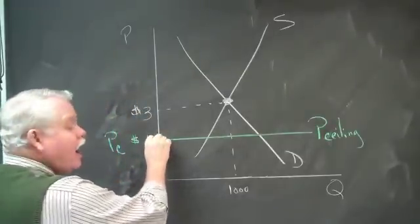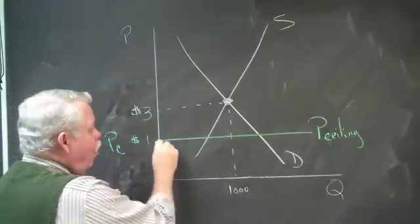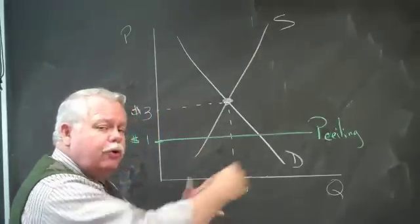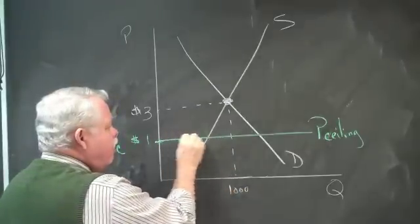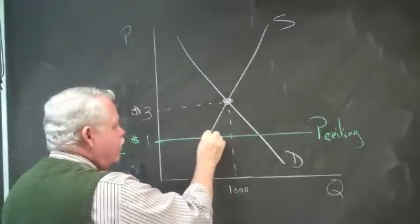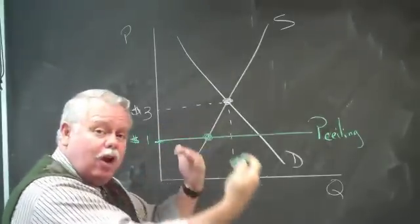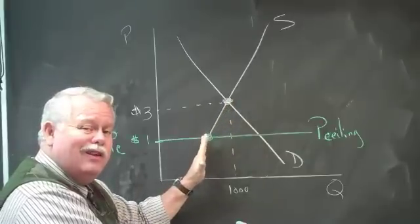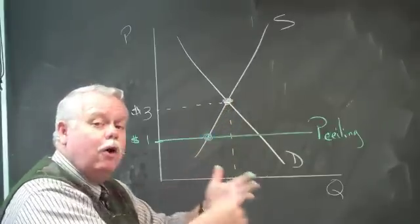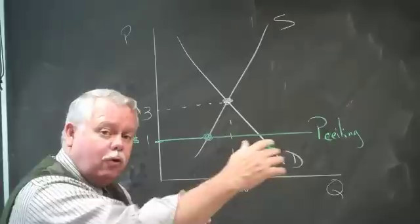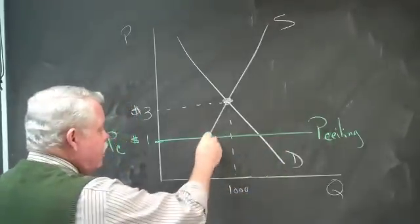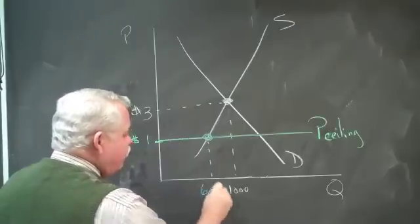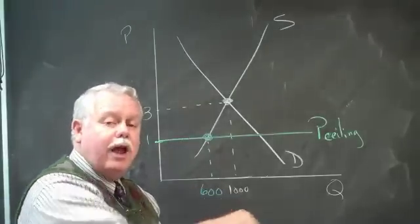at $1 per gallon, what happens to the producers, the sellers, the dairy farmers who produce the milk? We read over to the supply curve and we say, well, at that low price, they will supply a smaller quantity than they used to. That's the law of supply. When price falls, the quantity of supply decreases. And in fact, they will only produce, let's say, 600 gallons of milk per store per day.